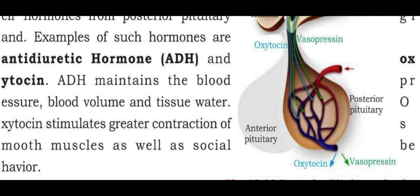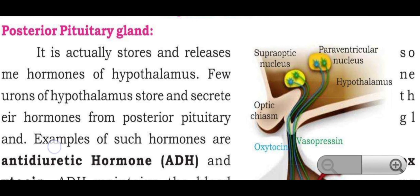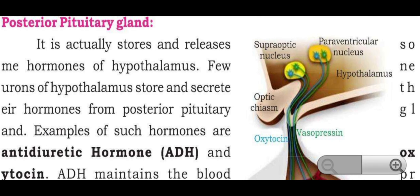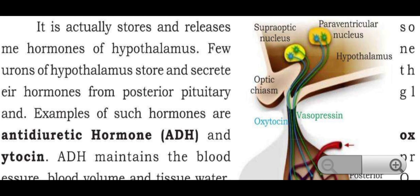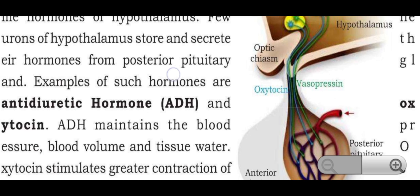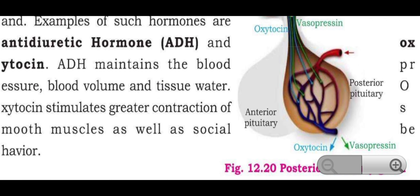Oxytocin stimulates greater contraction of smooth muscles as well as social behavior. In the figure, oxytocin is shown originating from the hypothalamus, passing through to the anterior and posterior pituitary.